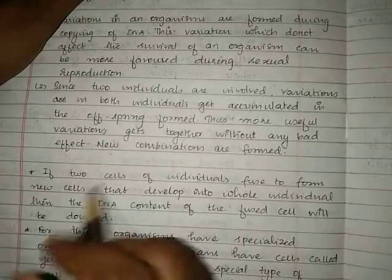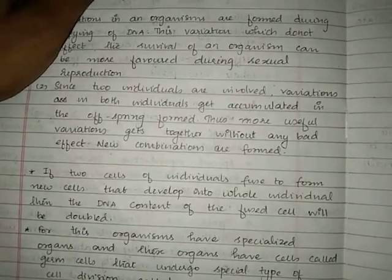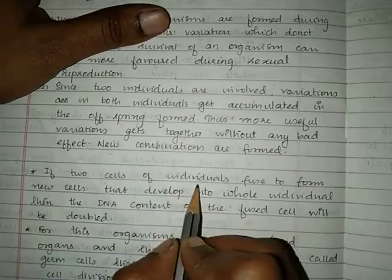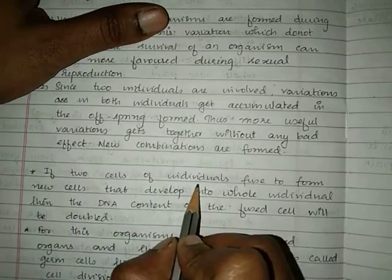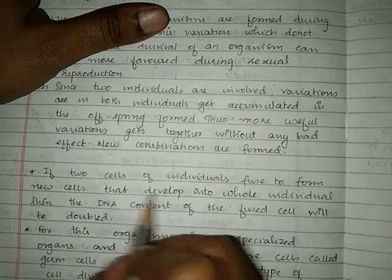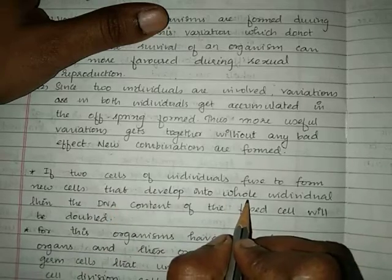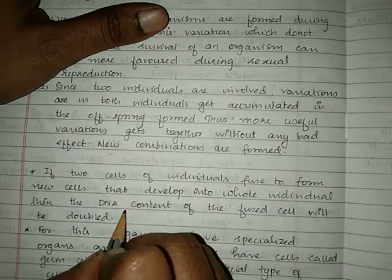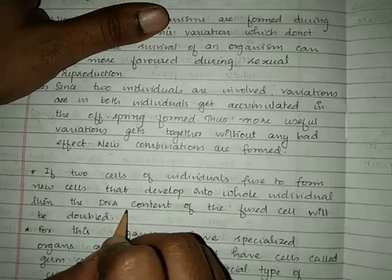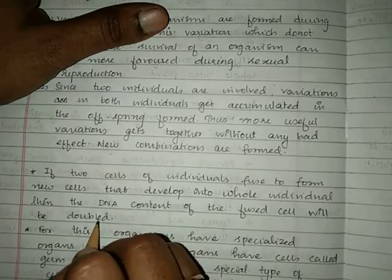For sexual reproduction to happen, two cells fuse to form the whole individual. The DNA content of the fused cell doubles. But there is a problem with this doubling — chromosomes in humans are 23 pairs, so the 23 pairs of chromosomes from the male and female cells combine.